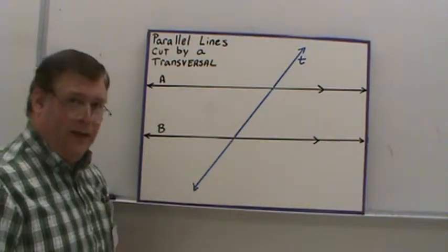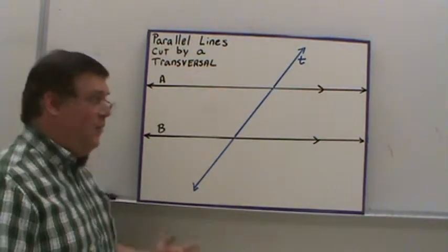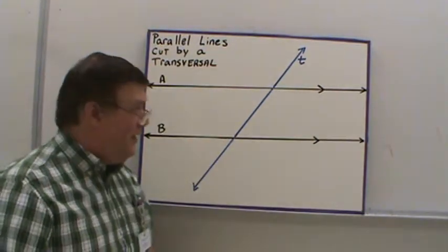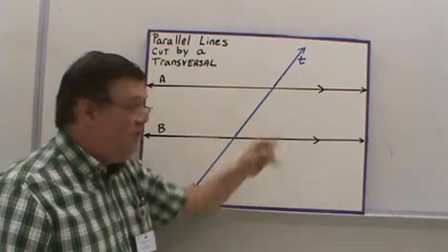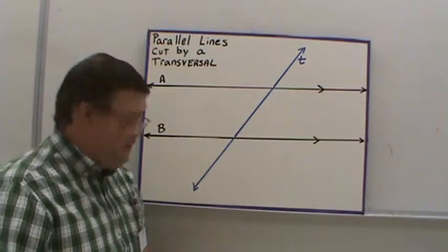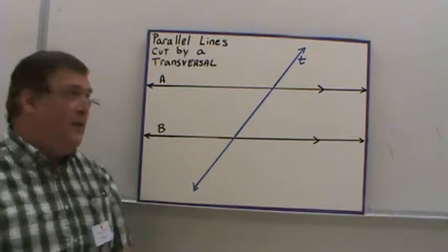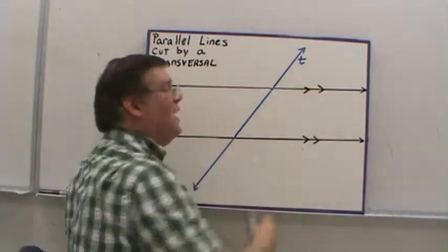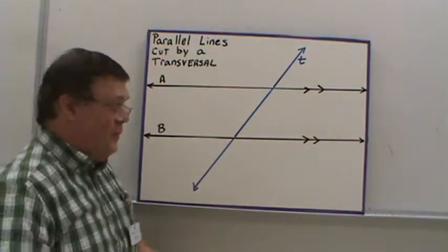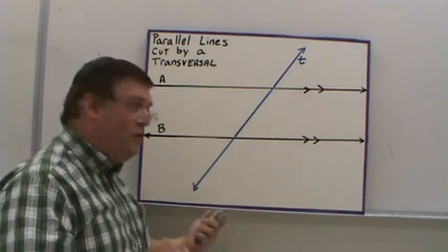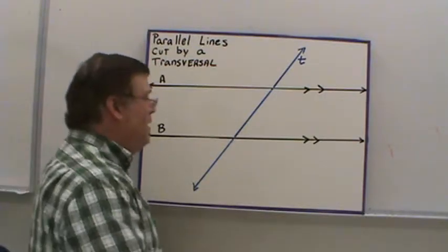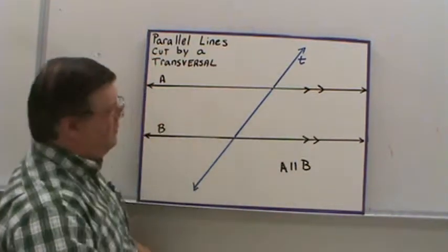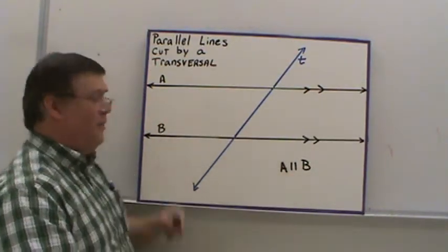Here we have two parallel lines. How do I know they're parallel? Well, they look parallel, but they also have these little extra arrowheads there — that's a symbol saying that these two lines are parallel. If I had another set of lines that look parallel, one might be marked with one set of arrows while the other would be marked with a second set of arrows. They may also write A parallel B; two lines like that lets you know they're parallel.